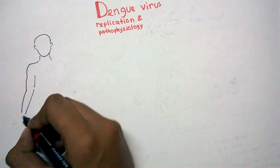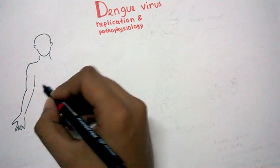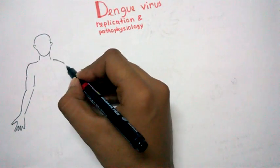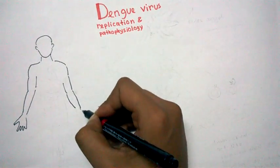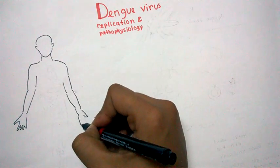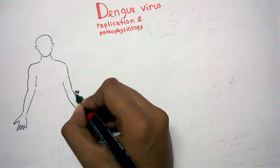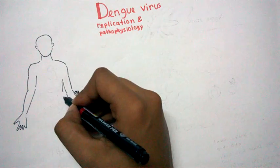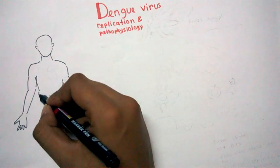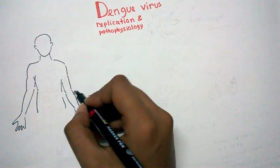Dengue is most common in the tropical areas, not in the temperate regions. So say for instance this is a man from a tropical region and here is a mosquito who bites the man and thus the dengue is transmitted to the body of this man.